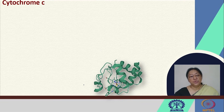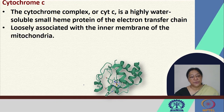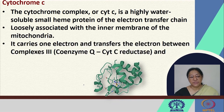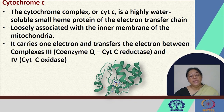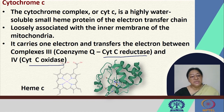Cytochrome C is a water-soluble small heme protein of the electron transfer chain. It is loosely associated with the inner membrane of the mitochondria, carries one electron, and transfers the electron between complexes III and IV — acting as cytochrome C reductase and cytochrome C oxidase. The heme C is the heme involved in the cytochrome C protein.